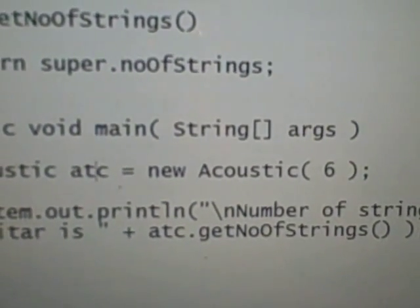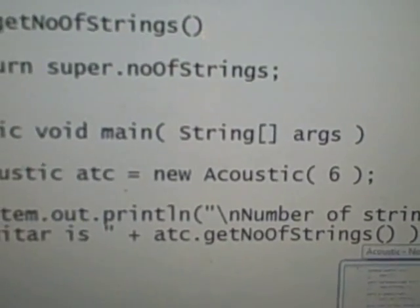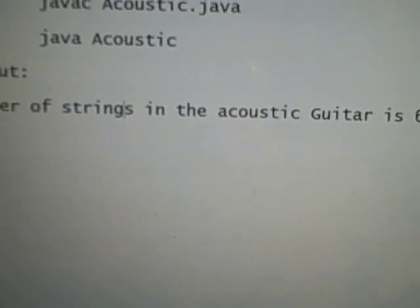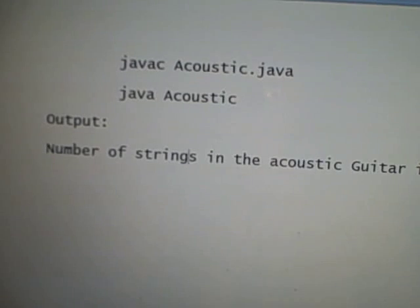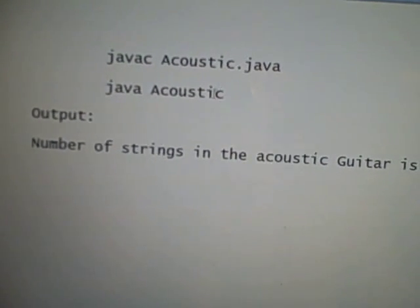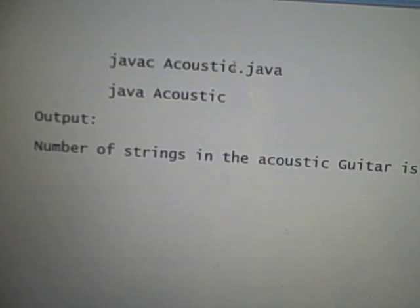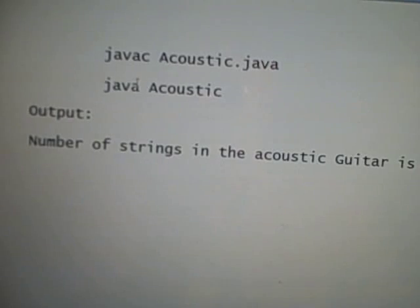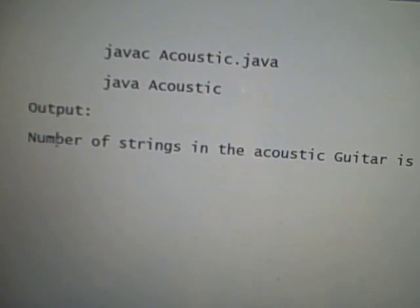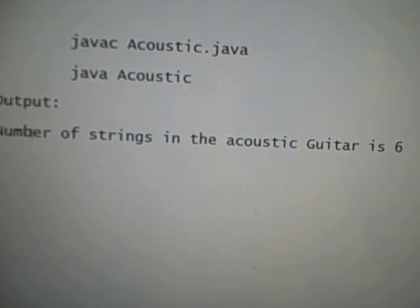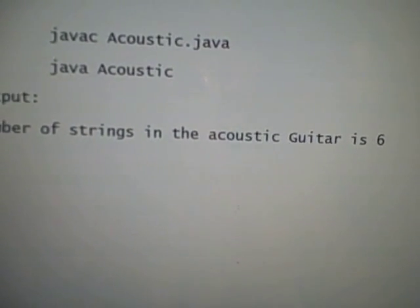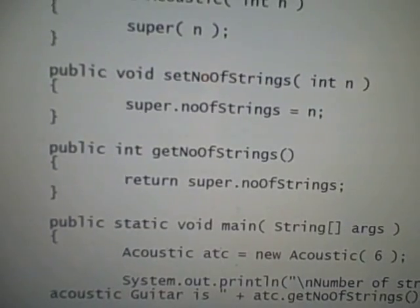Okay, here is the output. So I compile my Acoustic subclass, then I run it using the Java command. And then this is going to be our output: number of strings in the acoustic guitar is 6, because we provided the value to be 6 right here.